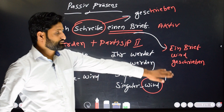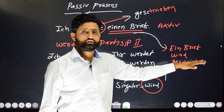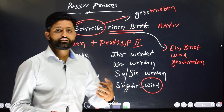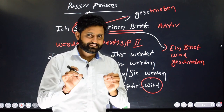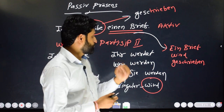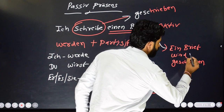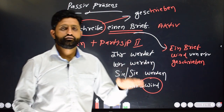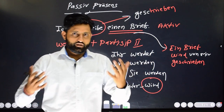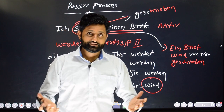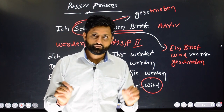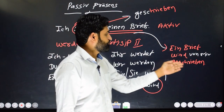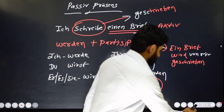In this sentence you can see that the action is more important than the subject. If you want to specify that a letter is being written by me and you want to mention 'me' in the sentence, then you would say: 'Ein Brief wird von mir geschrieben.' If someone asks you what is being done, you can just say 'Ein Brief wird geschrieben.' If you want to specify who is writing, then say 'Ein Brief wird von mir geschrieben.'